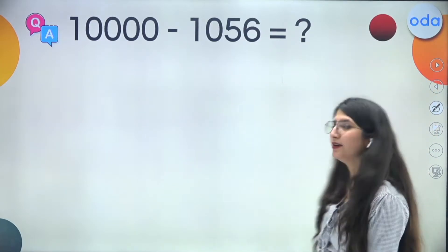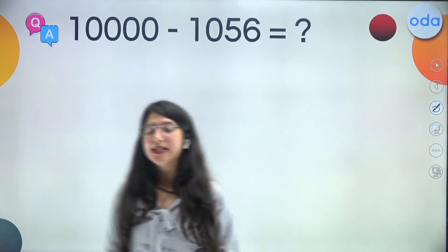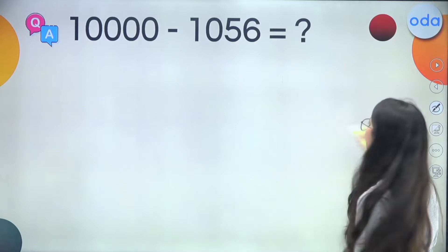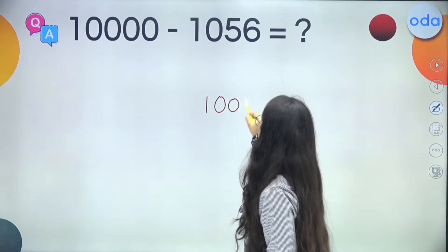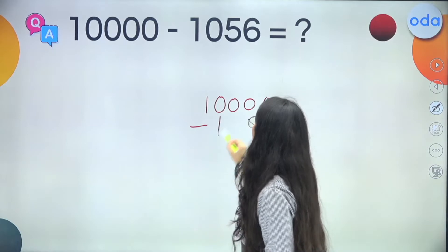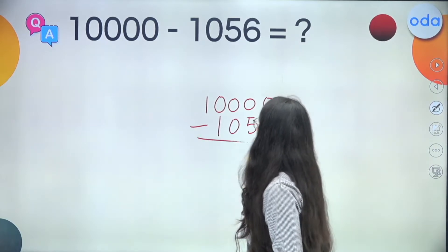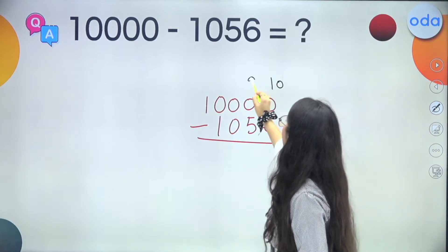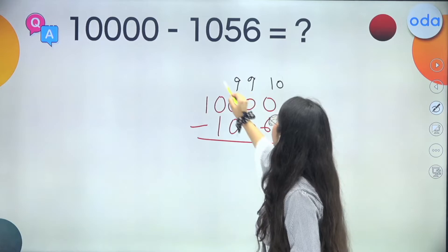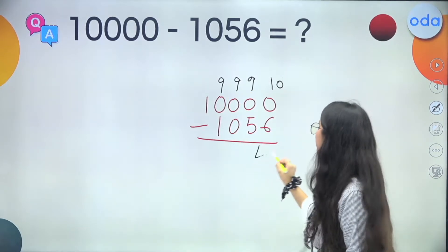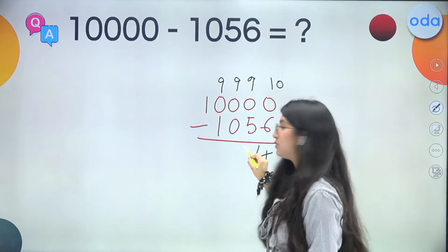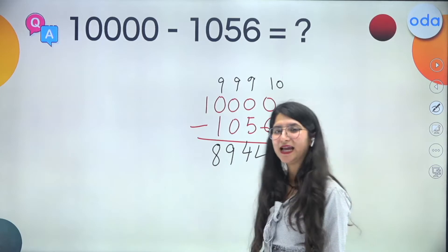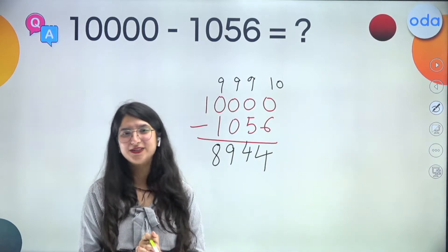One more question: 10,000 minus 1,056. Last from 10 and all from 9. So: 10 minus 6 is 4, 9 minus 5 is 4, 9 minus 0 is 9, 9 minus 1 is 8. Our answer is done in just a few seconds: 8,944.